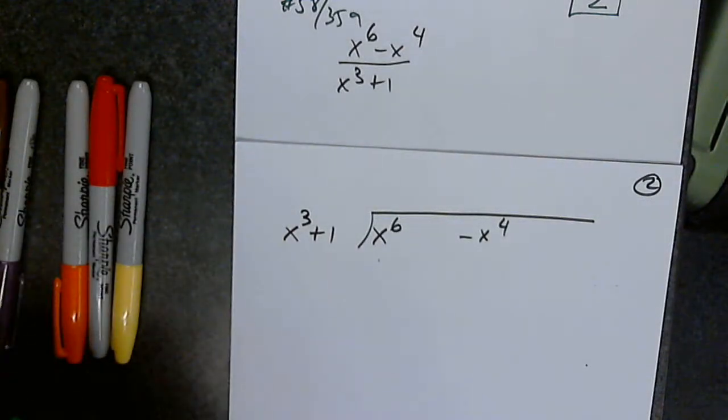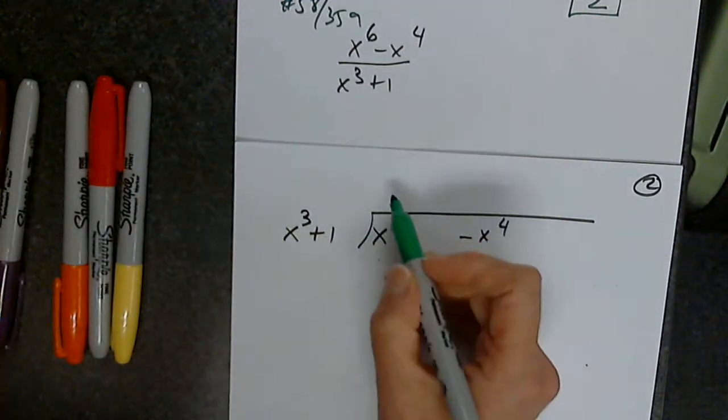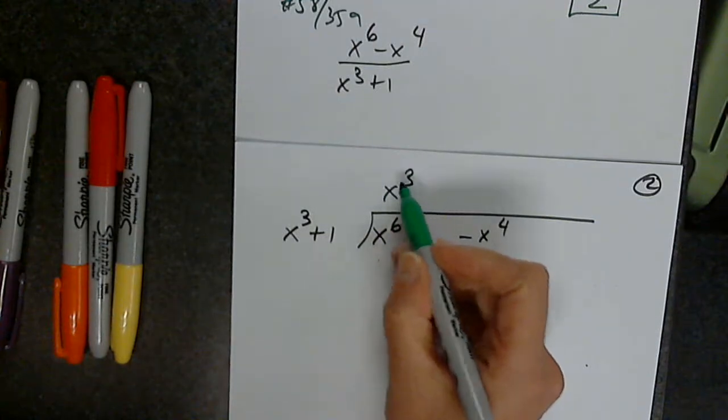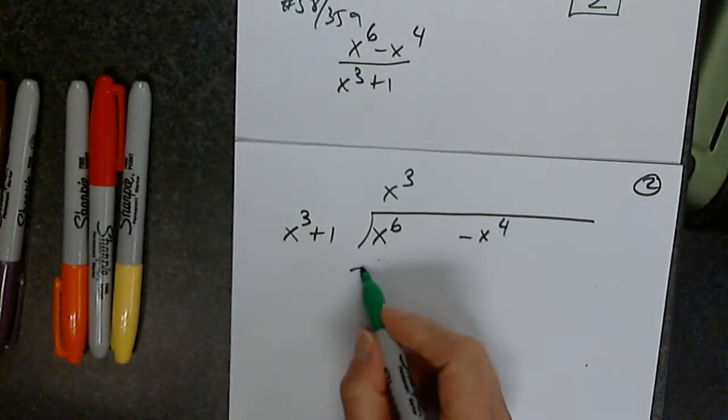x cubed times what is x to the sixth? Good. So x cubed times x cubed is positive x to the sixth.